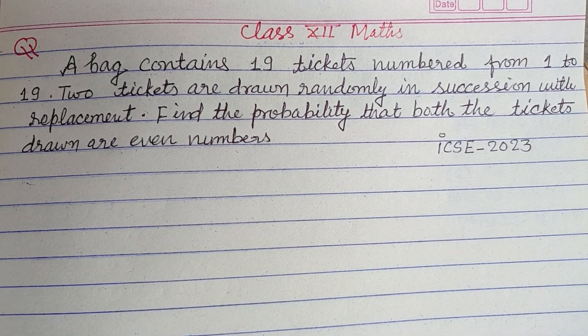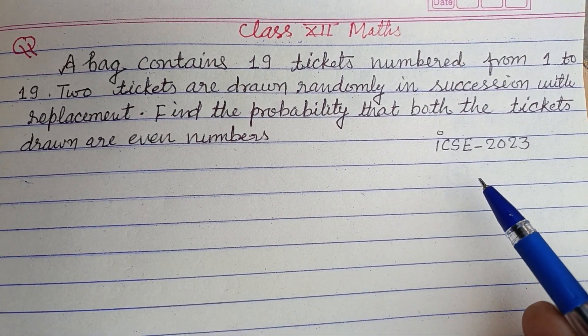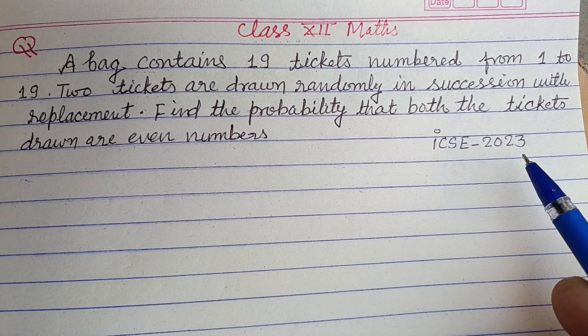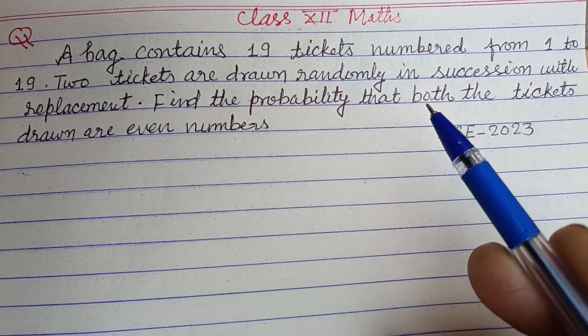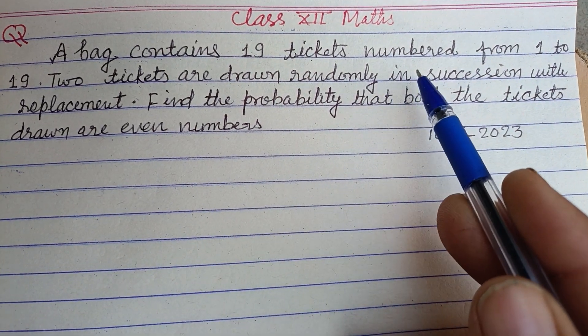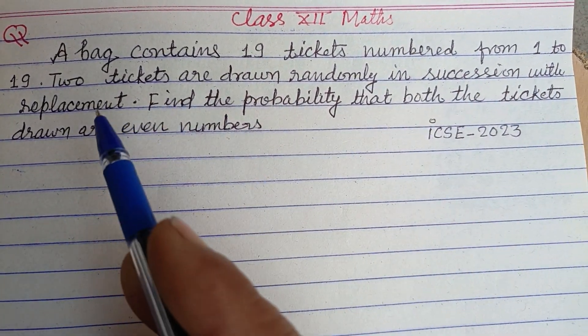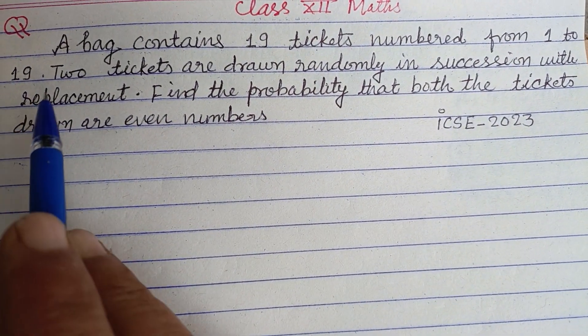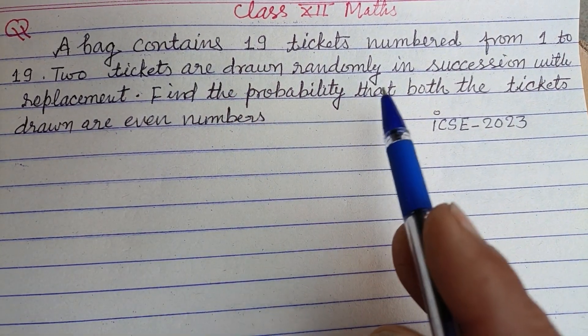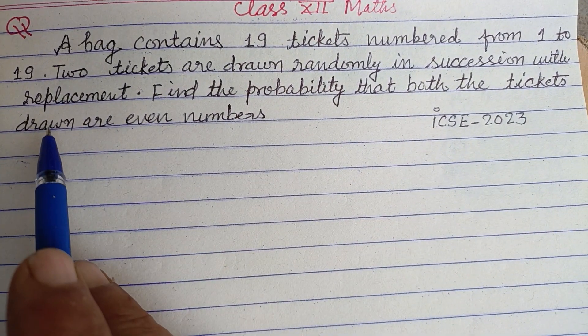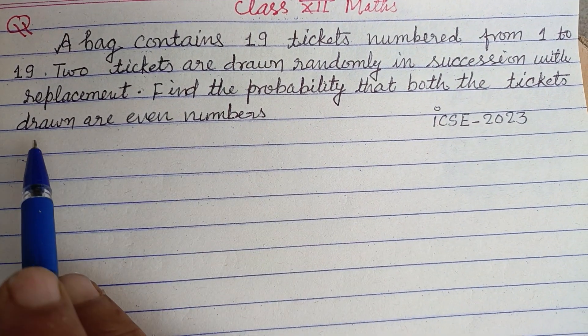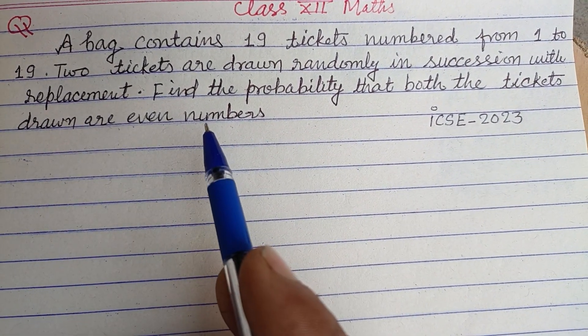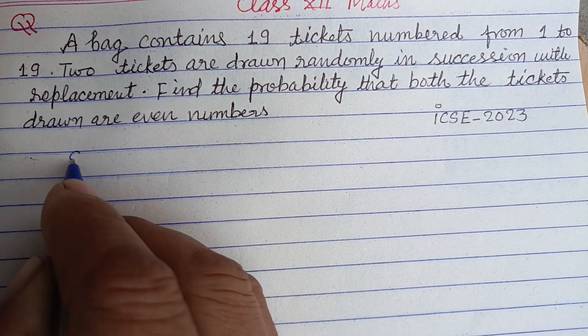Hello viewers, warm welcome to this YouTube channel. Question from ICSC class 12 2023 board exam: A bag contains 19 tickets numbered from 1 to 19. Two tickets are drawn randomly in succession with replacement. Find the probability that both tickets drawn are even numbers.